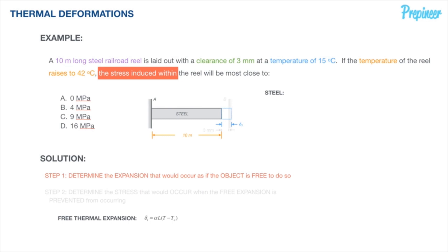Let's define what is given in our problem for the steel railroad reel. The initial length is 10 meters. The clearance delta_c is three millimeters, which I'll convert to 0.003 meters. The initial temperature is 15 degrees Celsius, raised to 42 degrees Celsius, giving us our temperature gradient. We'll also need the coefficient of thermal expansion.